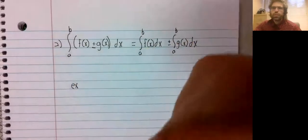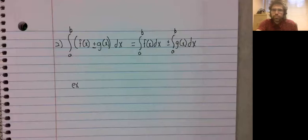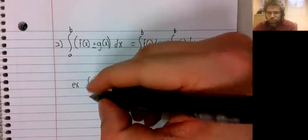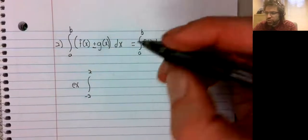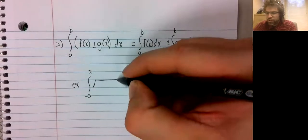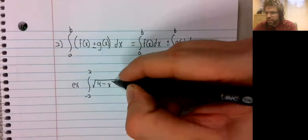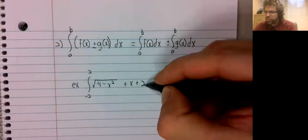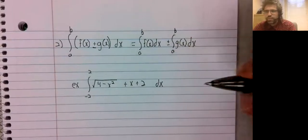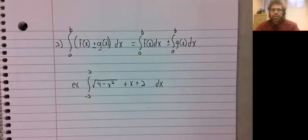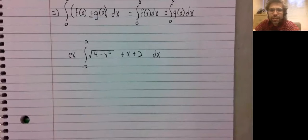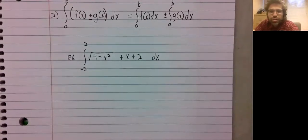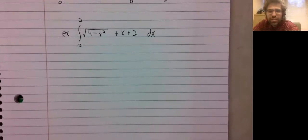For example, the integral from negative 2 to 2 of the square root of 4 minus x squared plus x plus 2, dx. Again, I'm obviously rather limited in my examples. If the area under the curves aren't nice geometric shapes, we don't know what to do with them at this point.